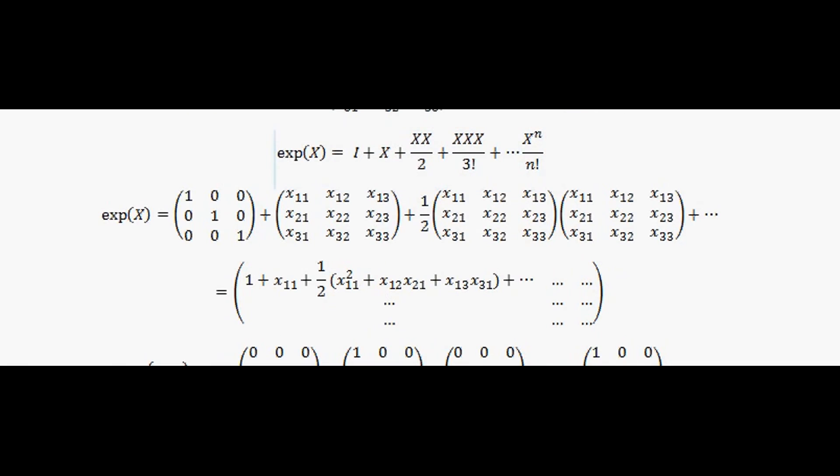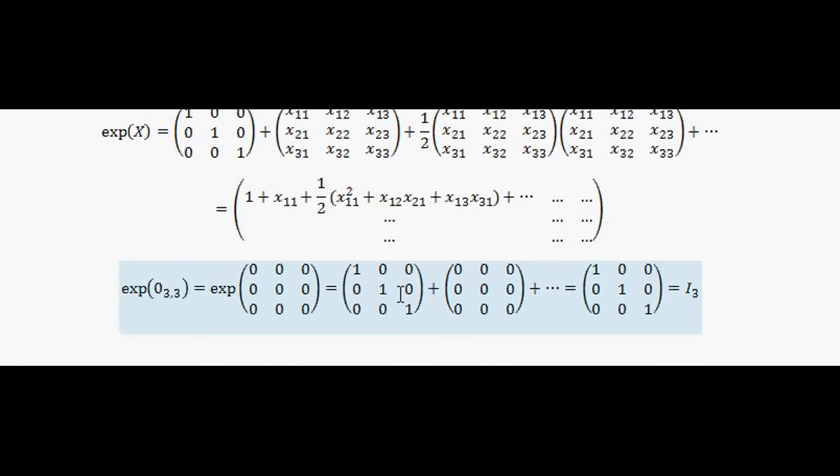Okay, so I'll start off with the identity matrix, and then I add itself, and then I keep on adding terms. So I'm keeping on adding, so for the square term it'll be the zero matrix multiplied by itself divided by two, the number two. And for the cubic term it's the zero matrix multiplied by zero matrix multiplied by zero matrix divided by the number six, and so on.